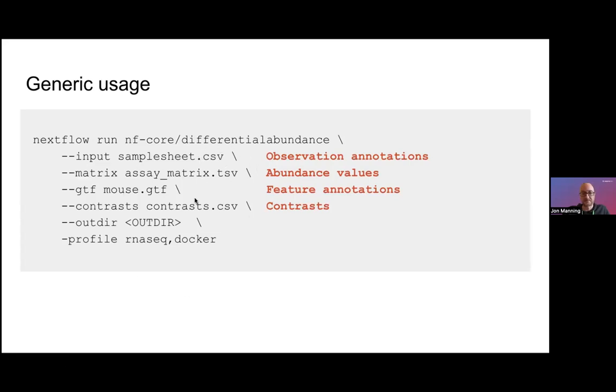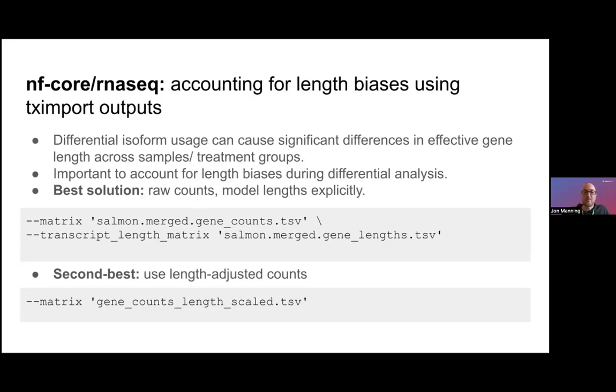To dwell a little bit more on the RNA-seq case, the nf-core RNA-seq module outputs its matrices from using the tximport R package or tximeta import package, and that is useful for accounting for the biases in length of transcripts across samples. So it's very important to adjust for cases where the differential isoform usage across treatment groups can lead to differences in length. So if treatment group A uses primarily a very short isoform and treatment group B uses primarily a very long isoform, that can introduce statistical biases in terms of counts which we need to adjust for. And the best way of doing that right now is to take the raw counts that come out of the RNA-seq workflow, this salmon merge gene counts TSV, and also pass into the differential abundance workflow the transcript length matrix.